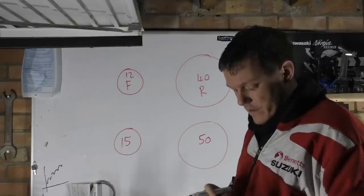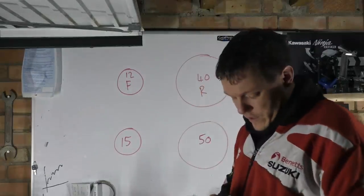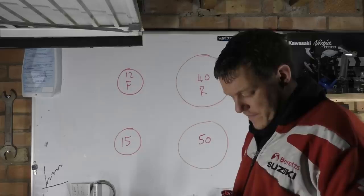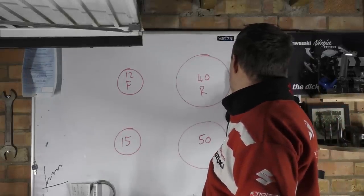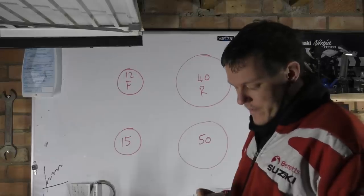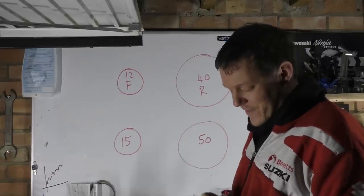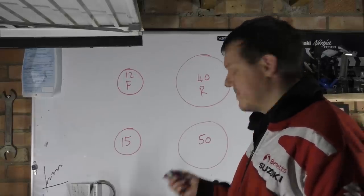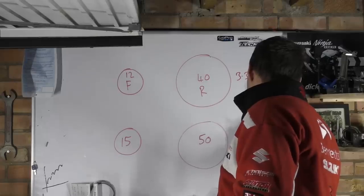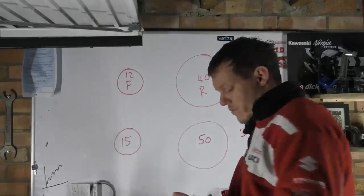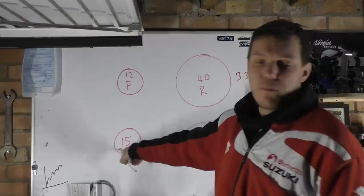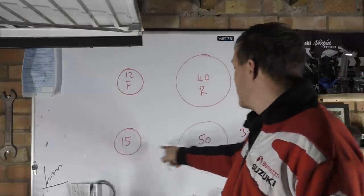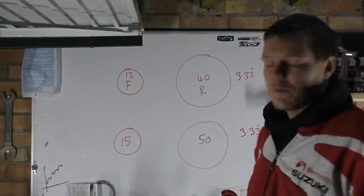Both of these have a ratio. So if we get 40 and divide that by 12, we get 3.33 recurring. And then if we get 50 and divide that by 15, same thing, right? So the ratios between the two are the same.